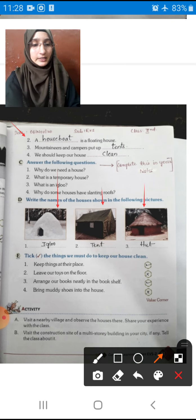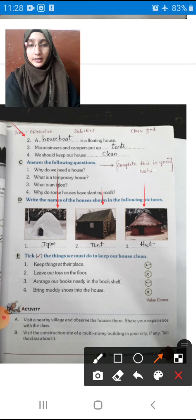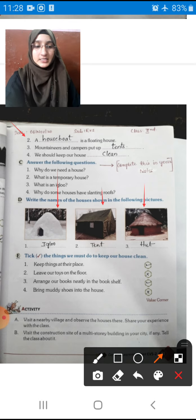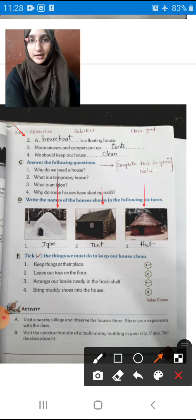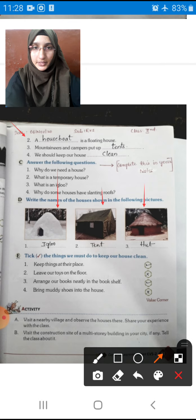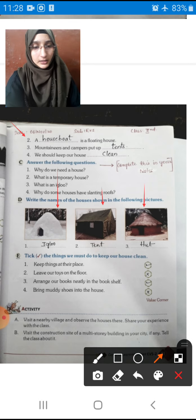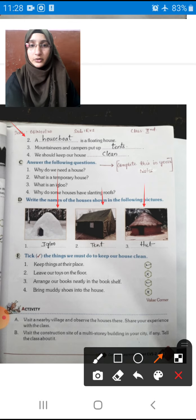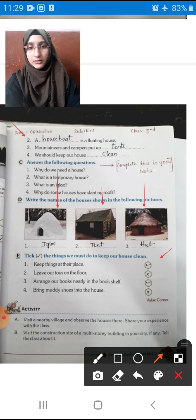Now come to E bit: Tick the things we must do to keep our house clean. We have to mark the things we should do to keep our house clean. Let's see the first one: Keep things at their place. Is it correct children, or we should not do? We must do this. If we keep our things at a proper place, our house will look very clean. So we have to put the right mark. Second one: Leave our toys on the floor. Toys should be kept at their proper place, not on the floor. So this is wrong one. Put the wrong mark in second one.